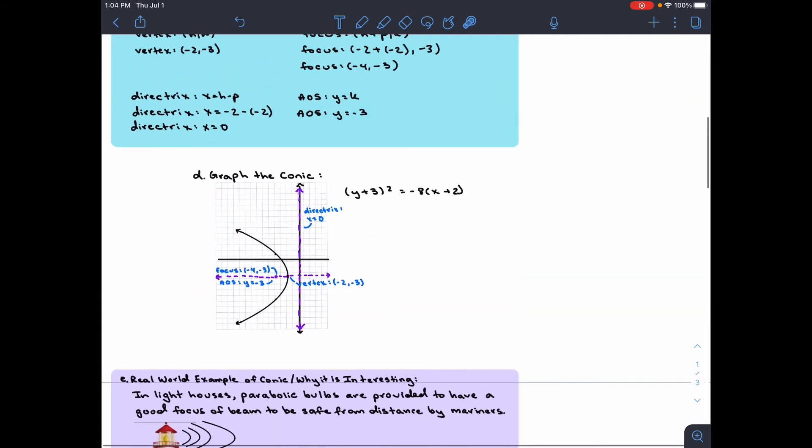Now we know that because it's horizontal, with vertex at (-2, -3) and focus at (-4, -3), it has to open to the left.